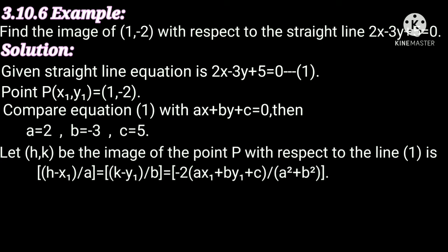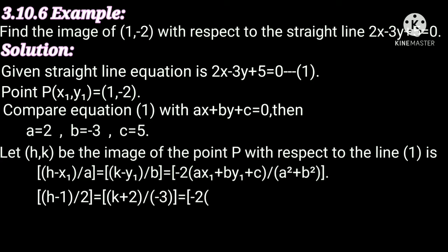Substituting x₁ equal to 1, a, b, c values: (h minus 1) by 2 equals (k plus 2) by minus 3 equals minus 2 into (2 into 1 plus minus 3 into minus 2 plus 5) divided by (2² plus (-3)²).